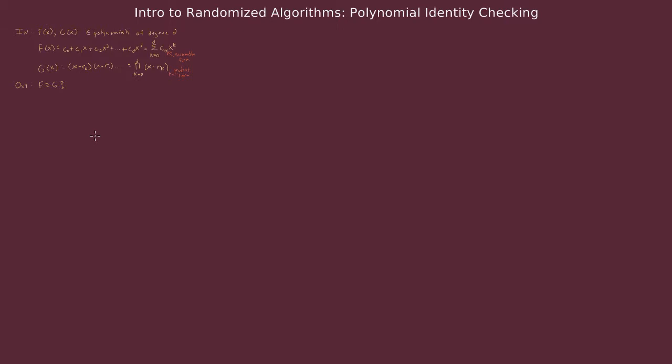Let's talk about identity testing when both polynomials are in summation form. So we're given f and h that are polynomials in summation form. A fact from algebra that we will not prove is that f is identical to h if and only if coefficients in corresponding terms are equivalent for all terms.